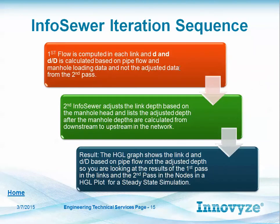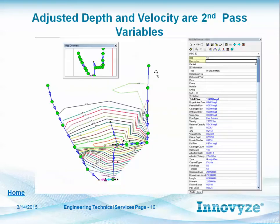Here's the InfoSewer iteration sequence. It's a two-pass process giving you both adjusted and non-adjusted depth and velocity. In the attribute browser, if you're using steady state, it will tell you the water depth, critical depth, adjusted depth, whether it was backwater — yes in this case — and the second pass ultimate solution. You can use this information with a relate, make a database query, and apply a domain on the query to show in red those pipes where adjusted depth or velocity differs from the first pass.